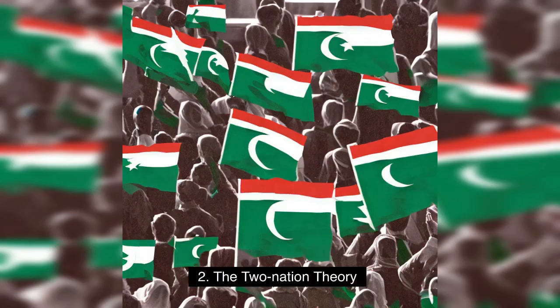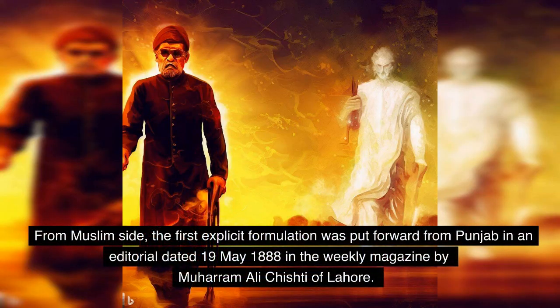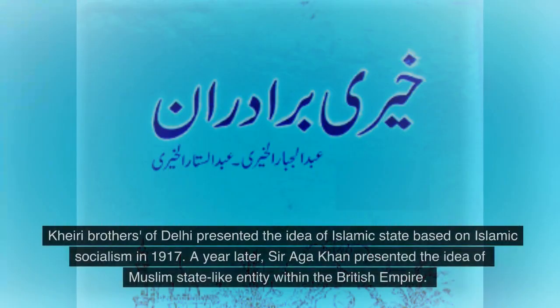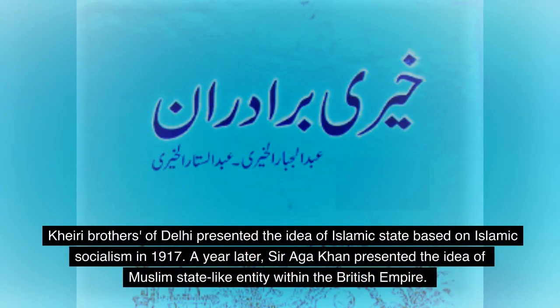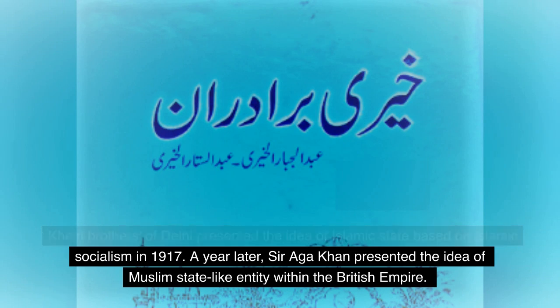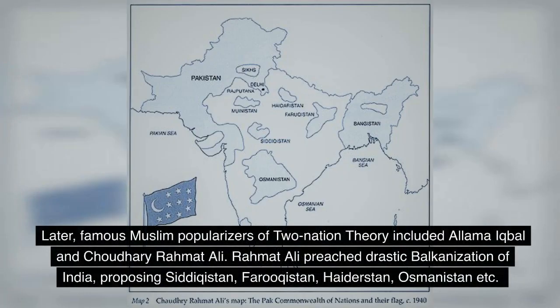Point 2: The Two-Nation Theory. From the Muslim side, the first explicit formulation was put forward from Punjab in an editorial dated 19 May 1888 in a weekly magazine by Meharam Ali Chishti of Lahore. Carey Brothers of Delhi presented the idea of an Islamic State based on Islamic socialism in 1917. A year later, Sir Aga Khan presented the idea of a Muslim state-like entity within the British Empire. Later, famous Muslim popularizers of the Two-Nation Theory included Allama Iqbal and Chowdhury Ramat Ali.